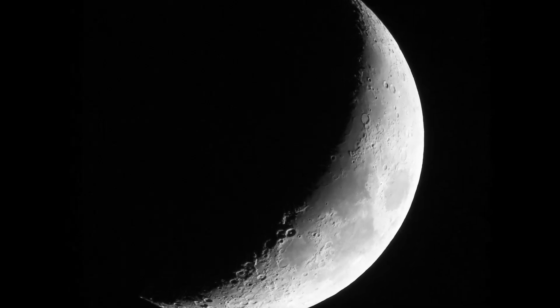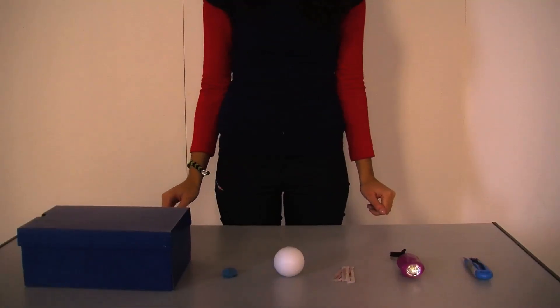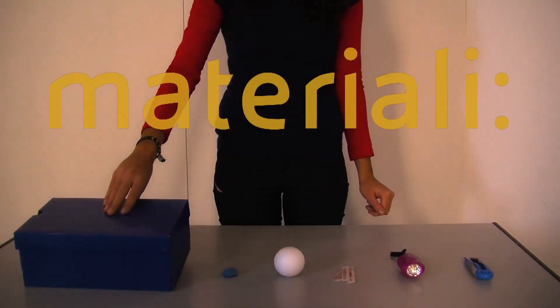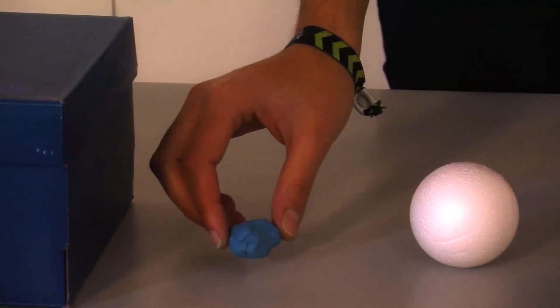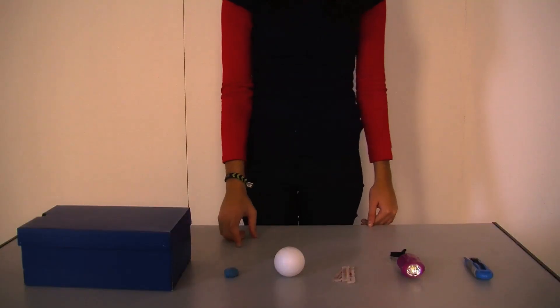A dark shoe box, a piece of plasticine black or blue, a small styrofoam ball, a toothpick, a torch, a cutter.